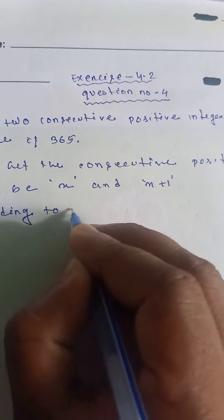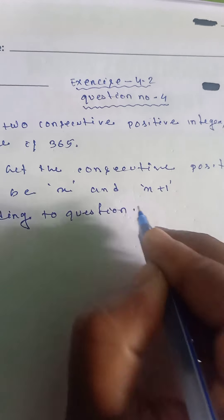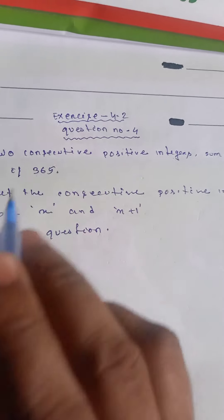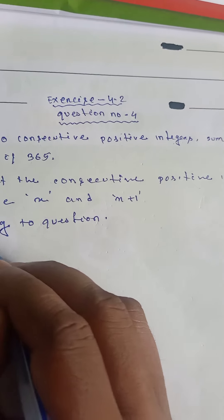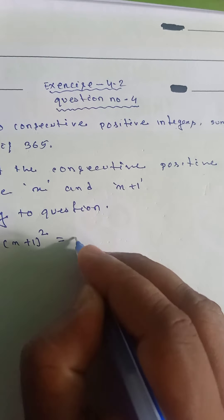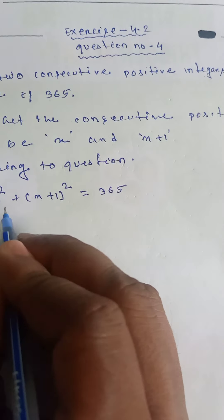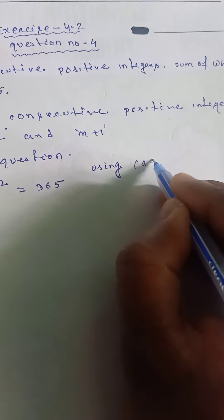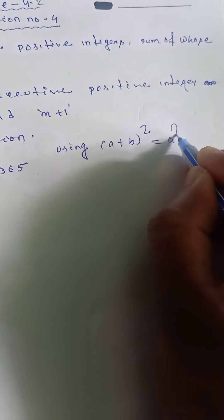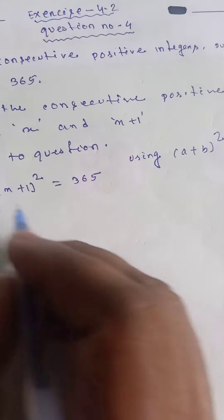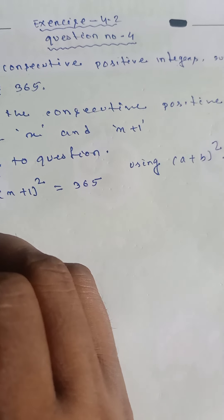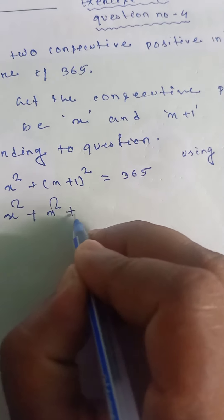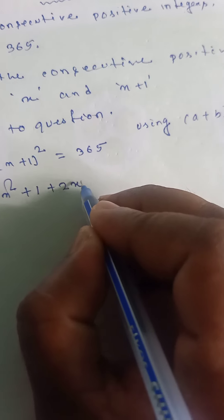According to the question, the sum of whose squares means x squared plus (x plus one) squared equals 365. Using the formula (a plus b) whole square equals a square plus b square plus 2ab.